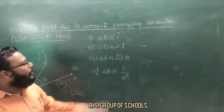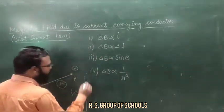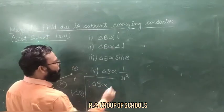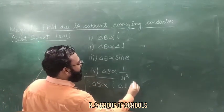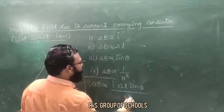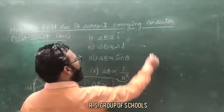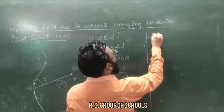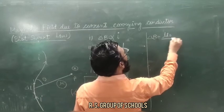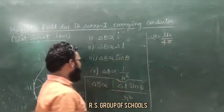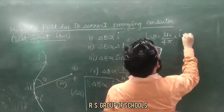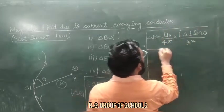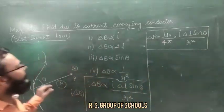So these four relations can be combined. We can write the equation as: delta B is proportional to I delta L sine theta upon R squared. Thereafter, the sign of proportionality is removed using a constant. The constant used here is mu naught upon 4 pi. So delta B equals mu naught upon 4 pi into I delta L sine theta upon R squared. This is the formula for the magnetic field produced by the small current carrying element.